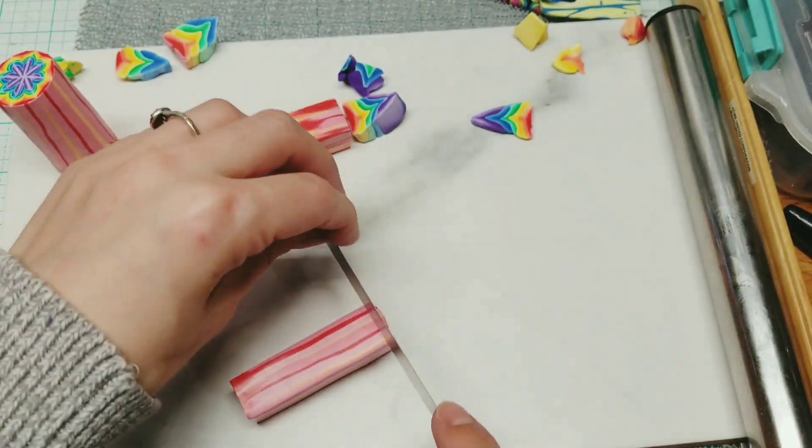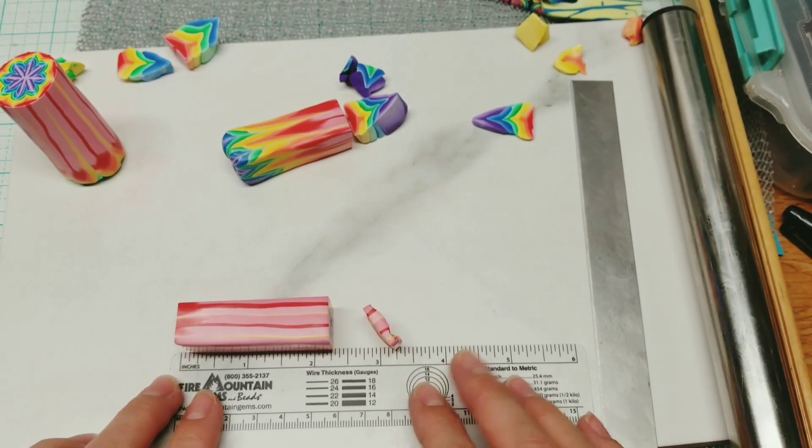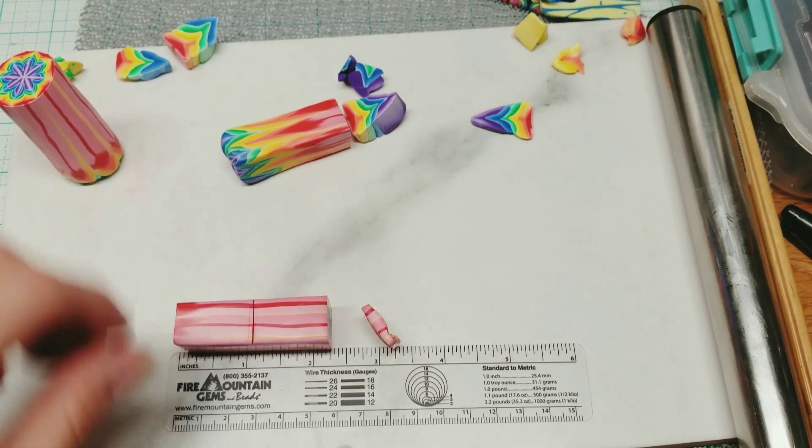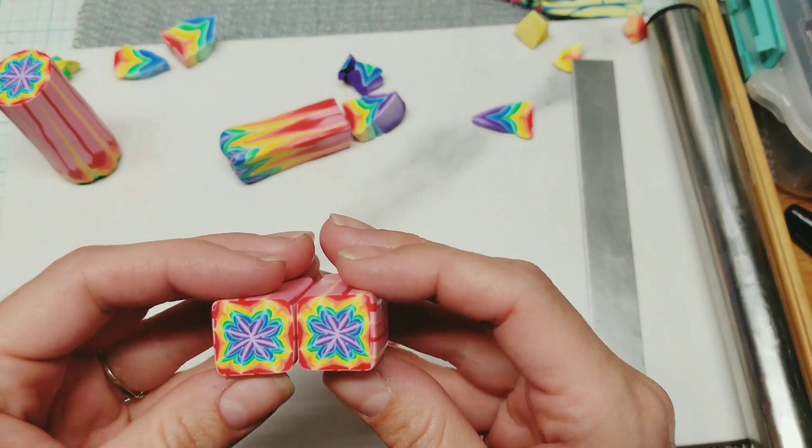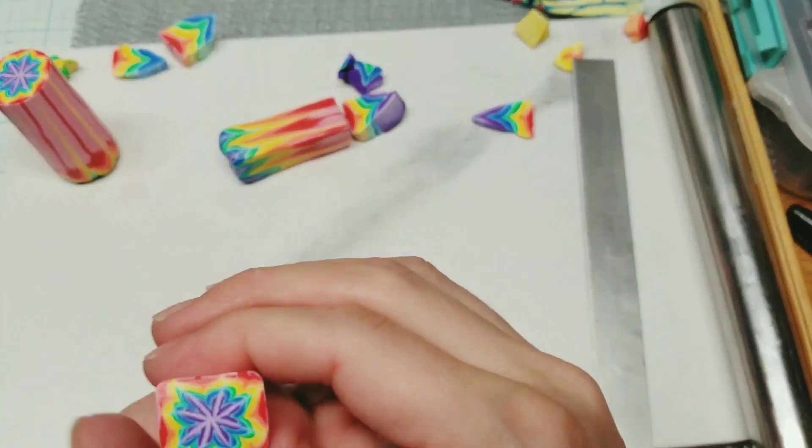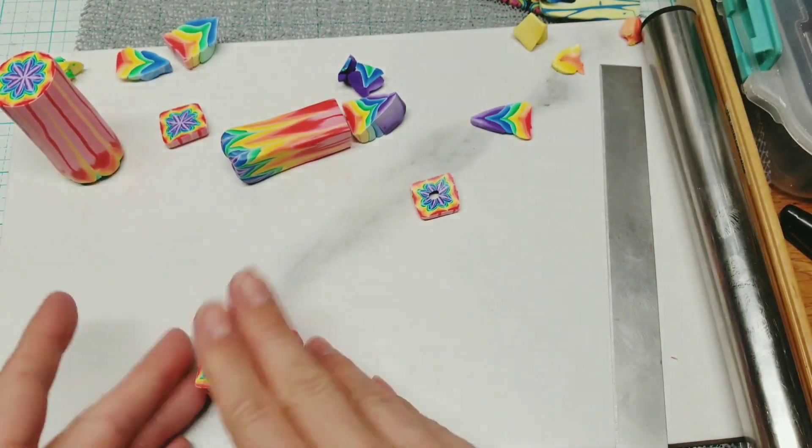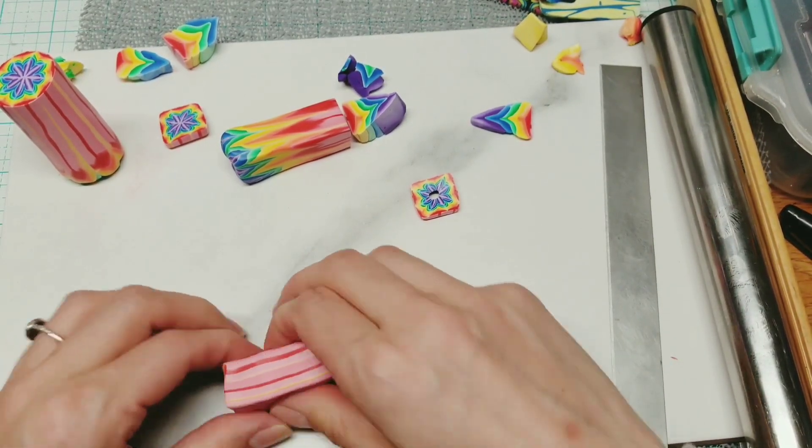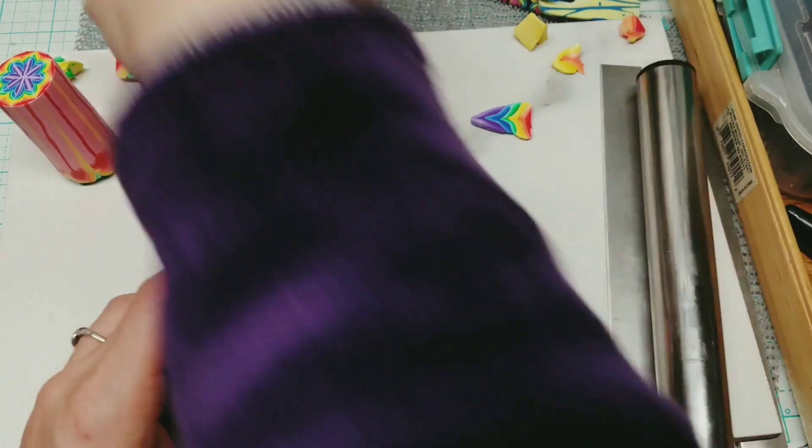And even that distorted end looks cool. So I'm just, this is really soft right now, so I should have let it rest a little while before I played a little bit more, but I'm going to stick two of these squares together and squish them together and then make kind of a pattern of four.